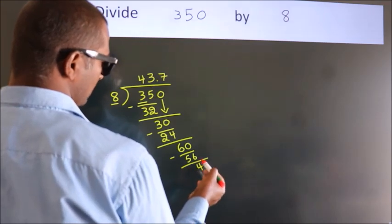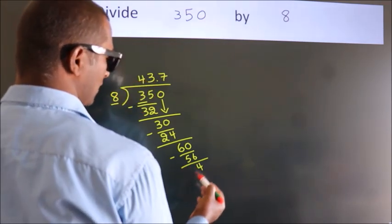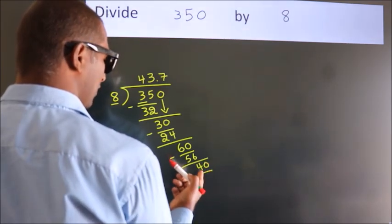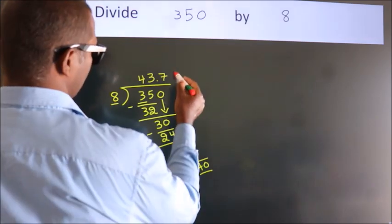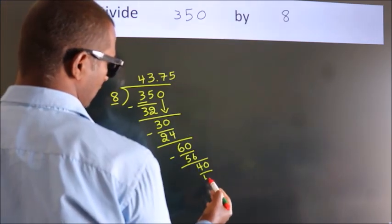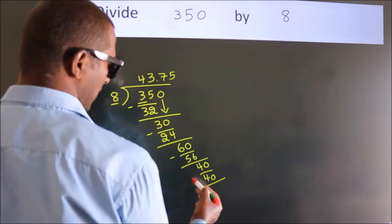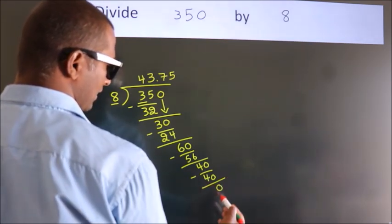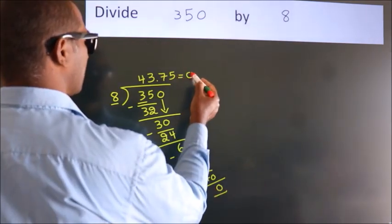After this, we already have the decimal. So, directly take 0. So, 40. When do we get 40? In 8 table. 8 fives 40. Now, we subtract. We get 0. Here, we got remainder 0. So, this is our quotient.